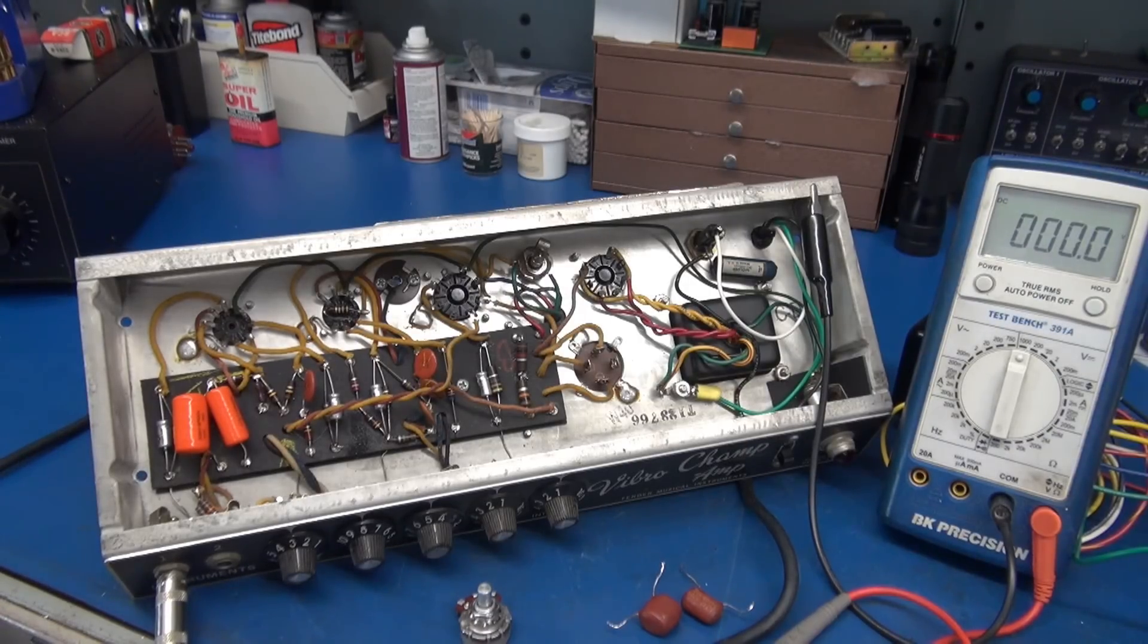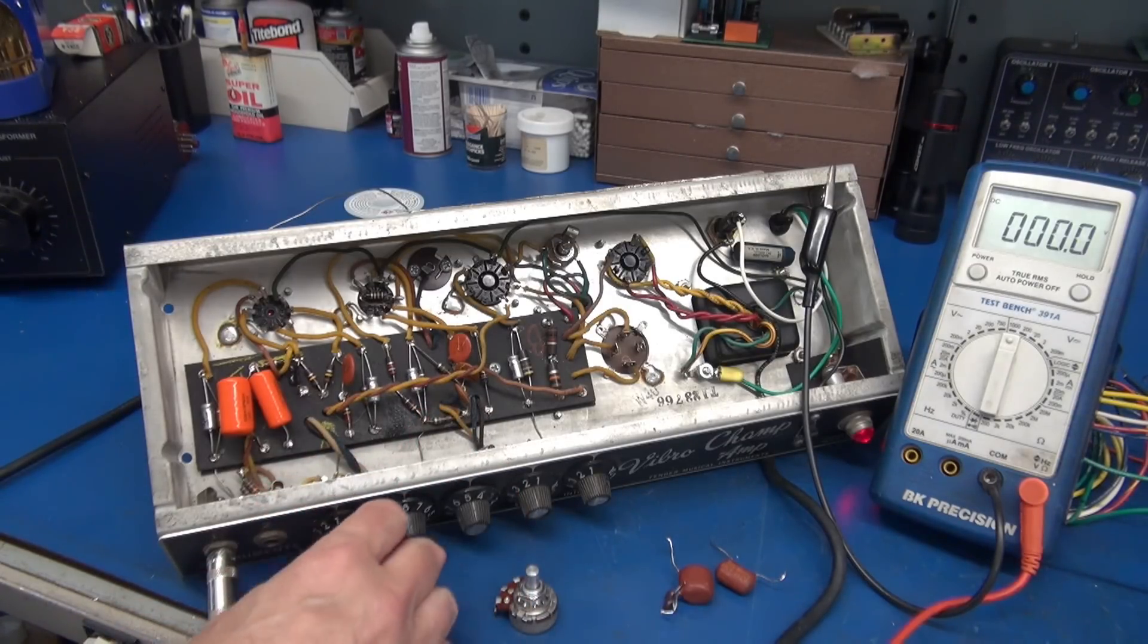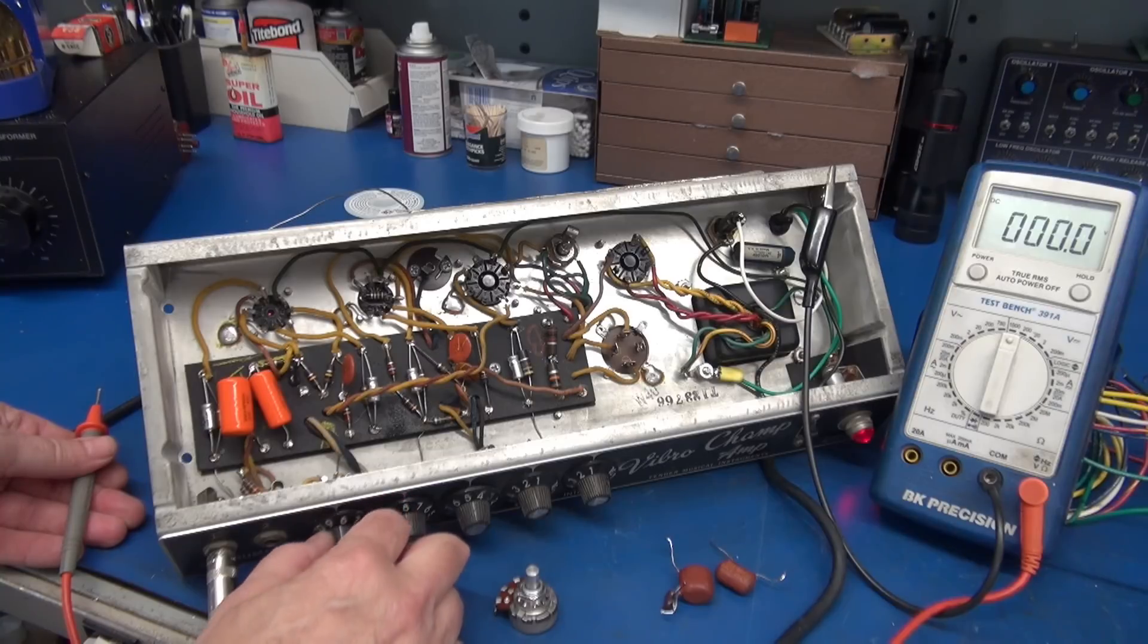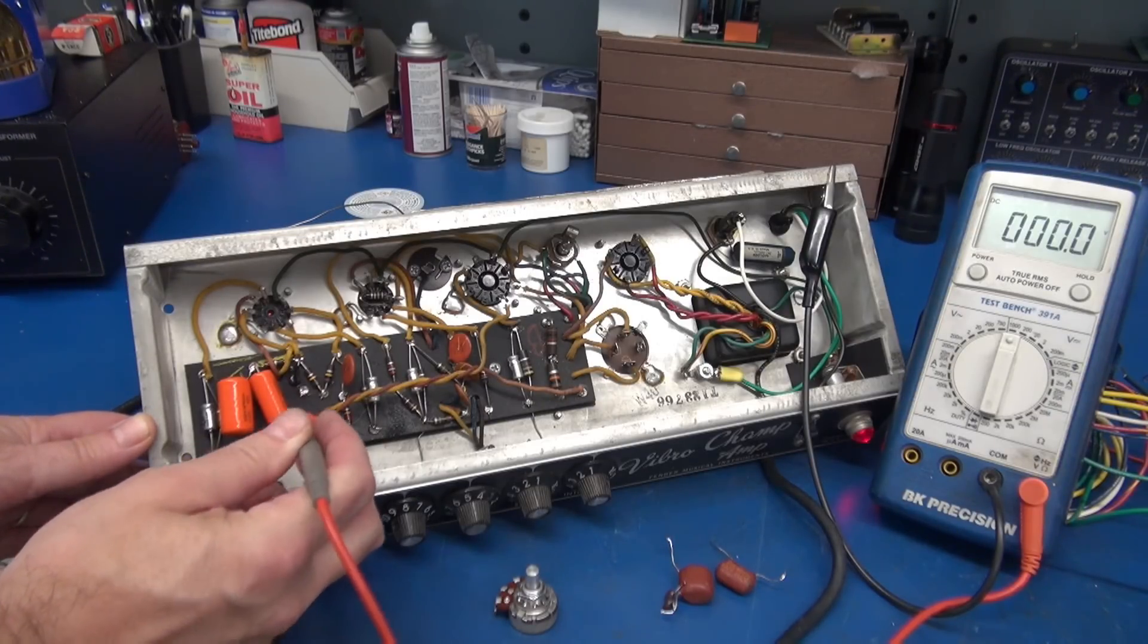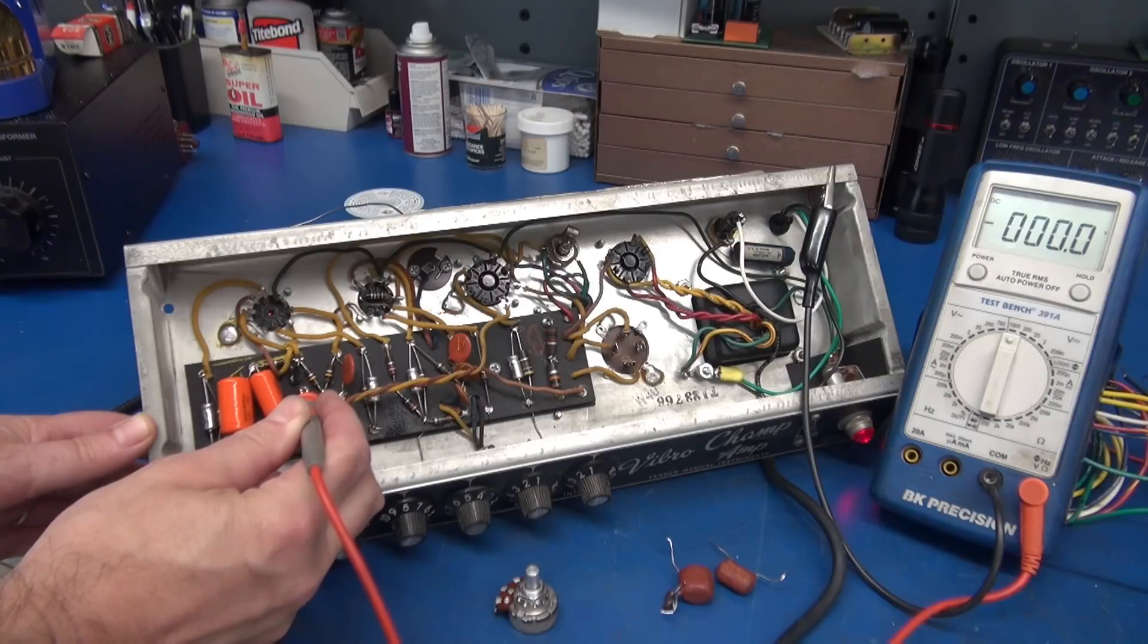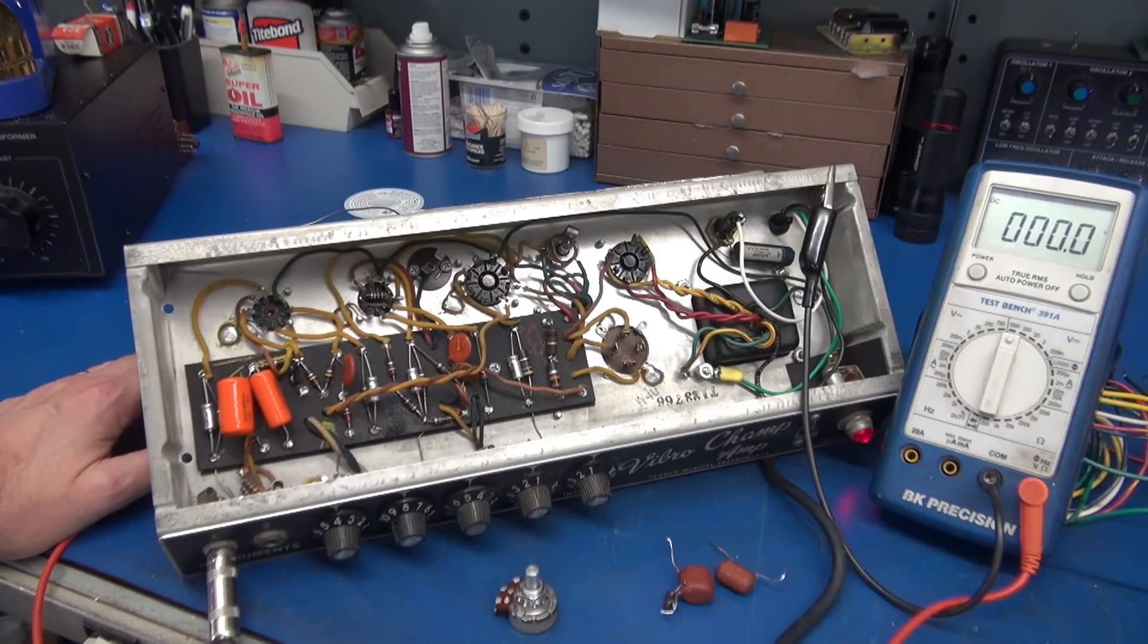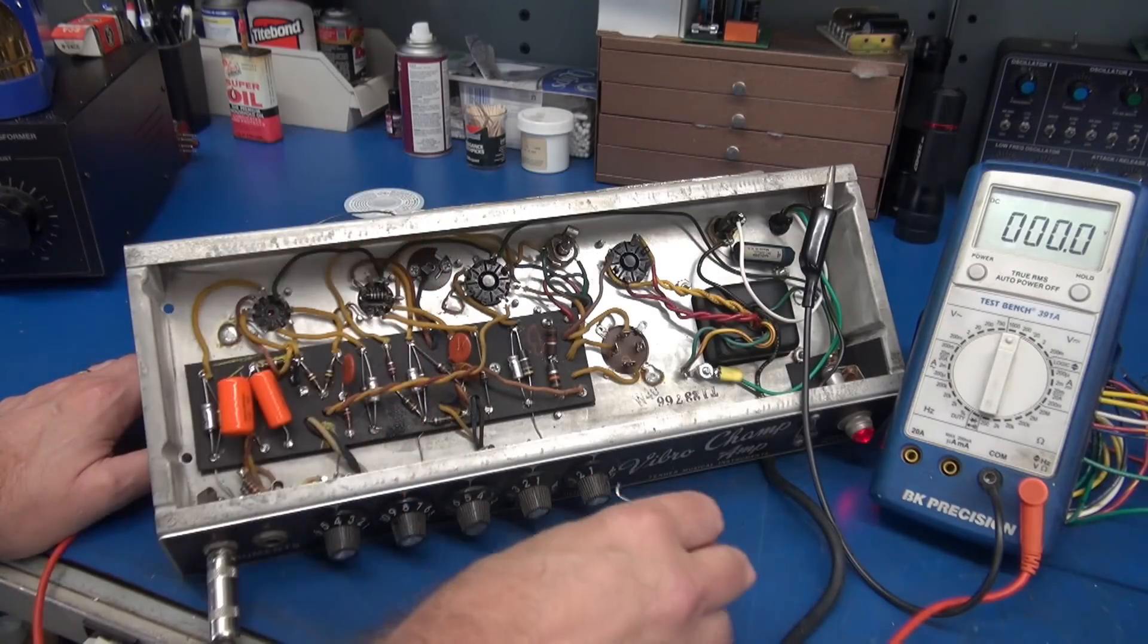So better turn that off and change the cap and see if that fixes it. Alright, third attempt. Now we've changed out the 250 puff cap. Let's bring up the volume control. Look there. Let's check the DC voltage here. Zero. Zero on all three tone caps.